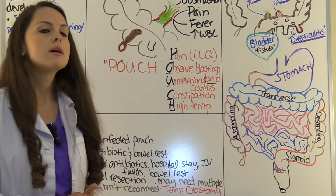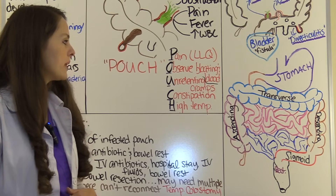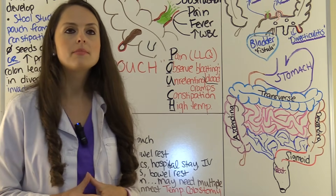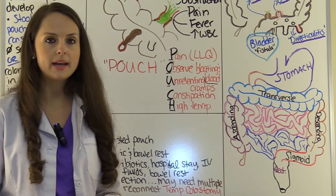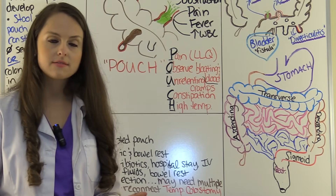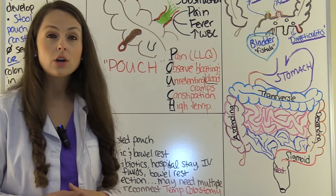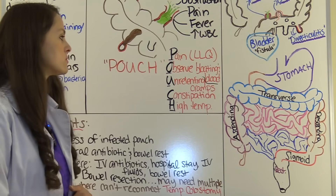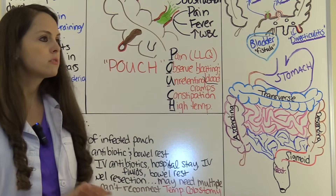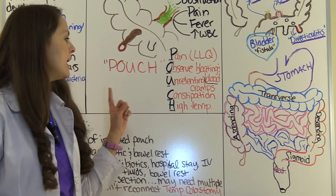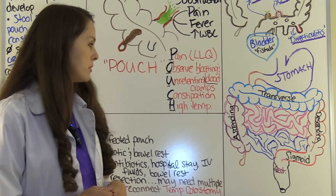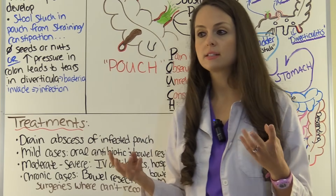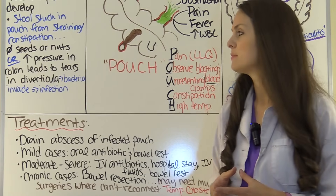O is for Observe — you may observe bloating and blood in the stool and abdominal bloating. U is for unrelenting cramps — patients with diverticulitis describe their pain as intense cramping. I had a family member who had a severe case, and she said the cramping was almost worse than childbirth after having six kids. C is for constipation — most commonly patients will have constipation, though they can have diarrhea. H is for high fever — they'll be running very high temperatures, even higher if it ruptures into peritonitis.